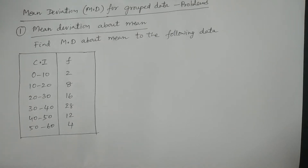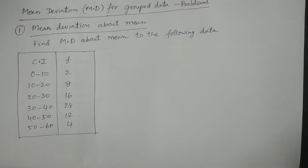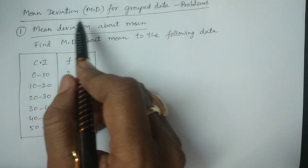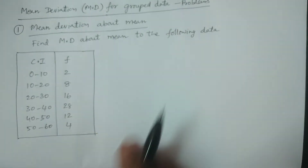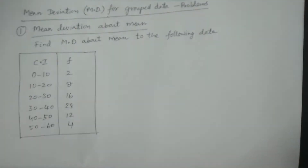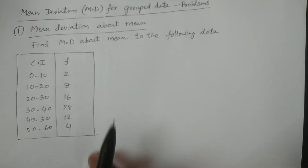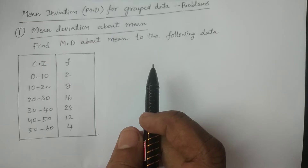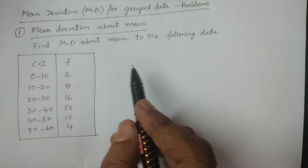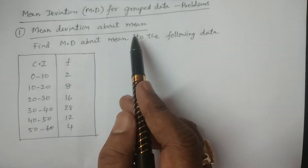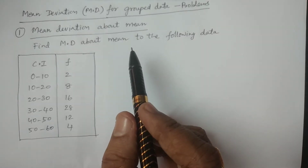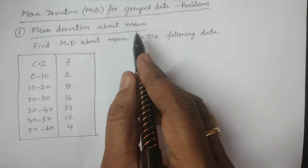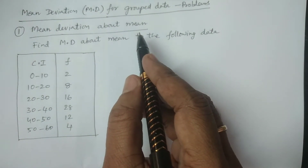Welcome to BSc Statistics students. In this lesson, I explain the problems of mean deviation for group data. We have three kinds of mean deviation: mean deviation about mean, mean deviation about median, and mean deviation about mode. Today in this class, I will explain mean deviation about mean.